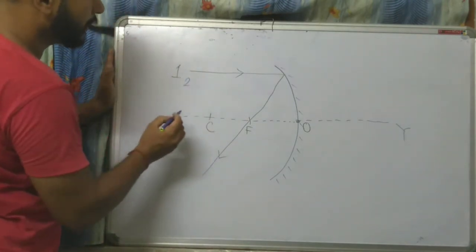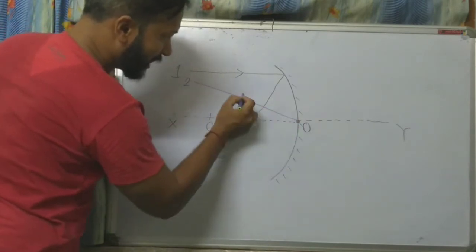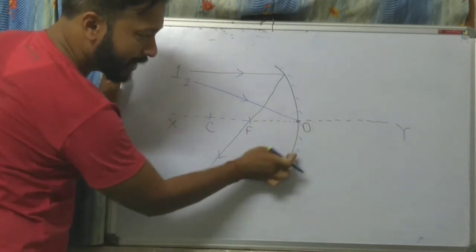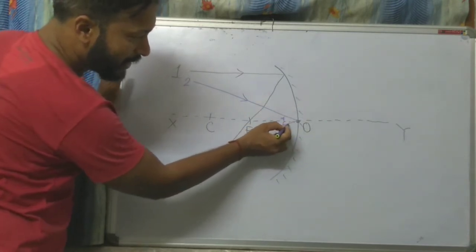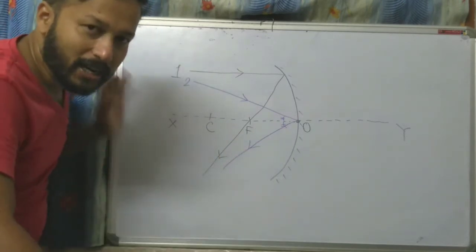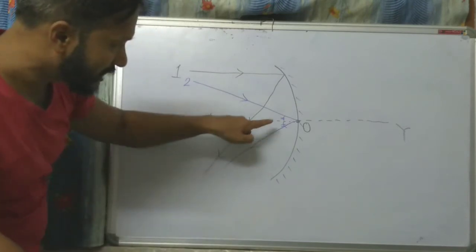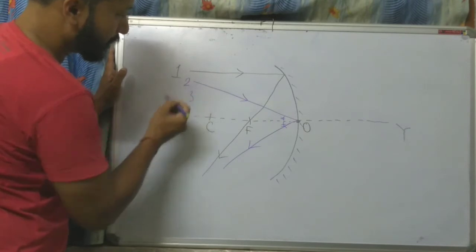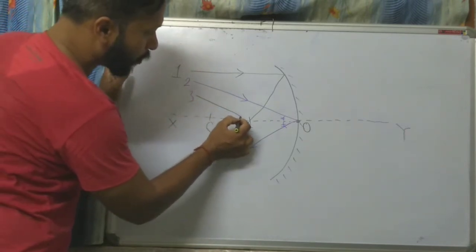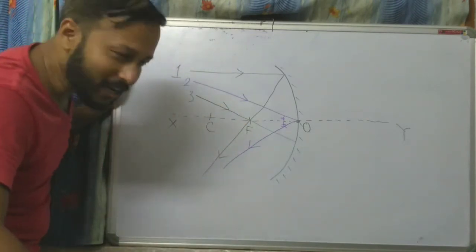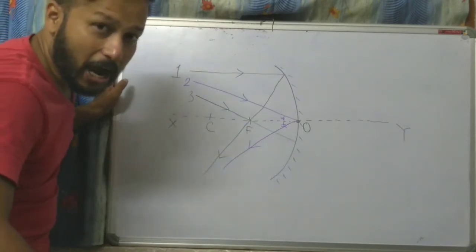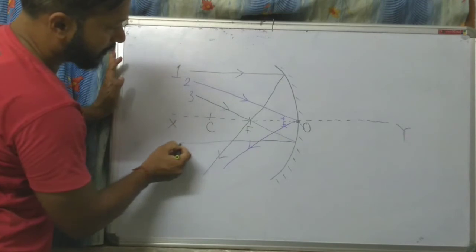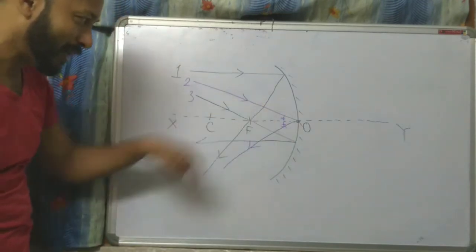Number two: if you aim the optical center, after reflecting by the mirror, by making the same angle, it will come out — just like with the convex mirror. Now, number three: you pass the ray through the focus point. If you send the ray to the focus point, you will see that after reflecting by the mirror, it will become parallel to the principal axis — this ray is parallel to the principal axis.